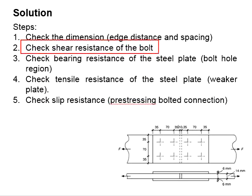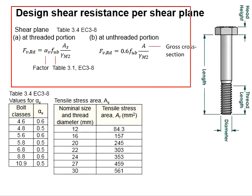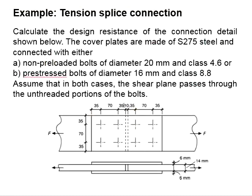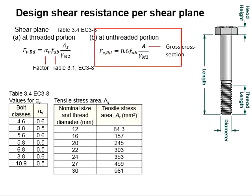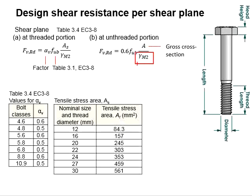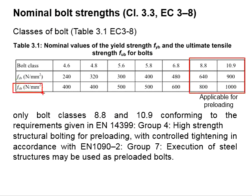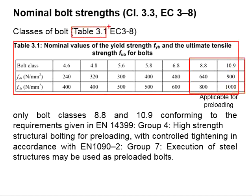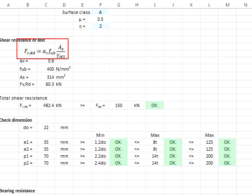Next, we check for the shear resistance of the bolt. The equations to determine the shear resistance are given here. It is stated that the shear plane passes through the unthreaded portions of the bolt, so the gross cross-sectional area A of the bolt is used. Gamma M2 is equal to 1.25. The ultimate tensile capacity of the bolt for class 4.6 is 400 N/mm², obtainable from Table 3.1 of EC3 Part 8. Substituting the relevant values gives a shear resistance of 60.2 kN per shear plane.